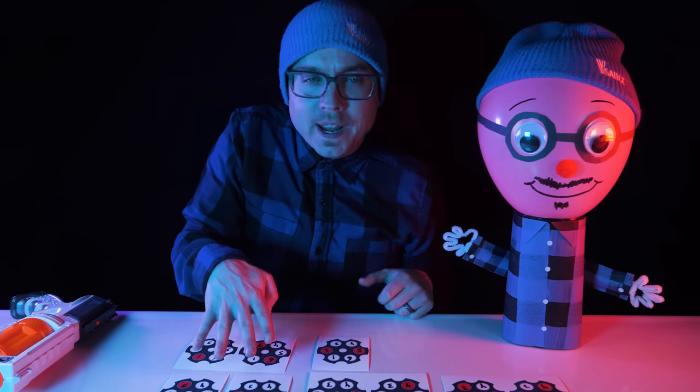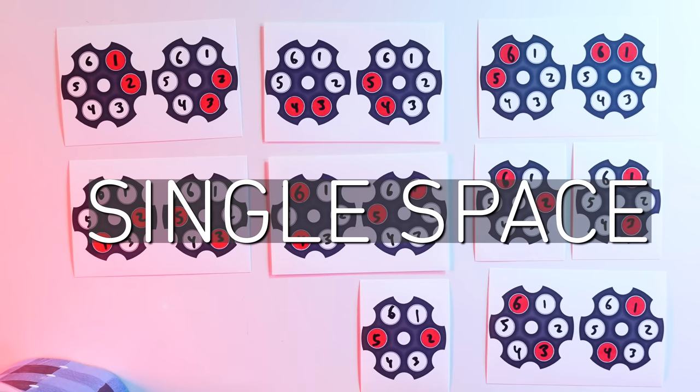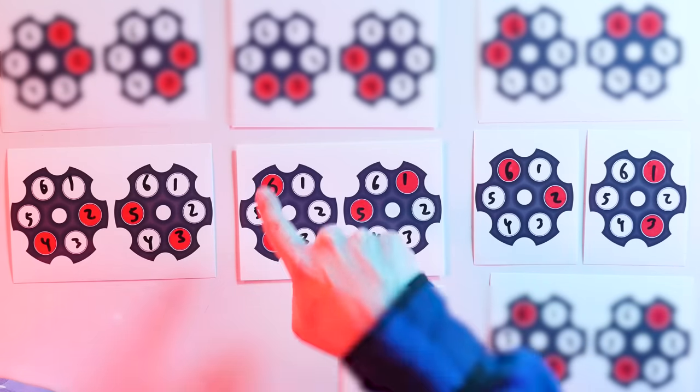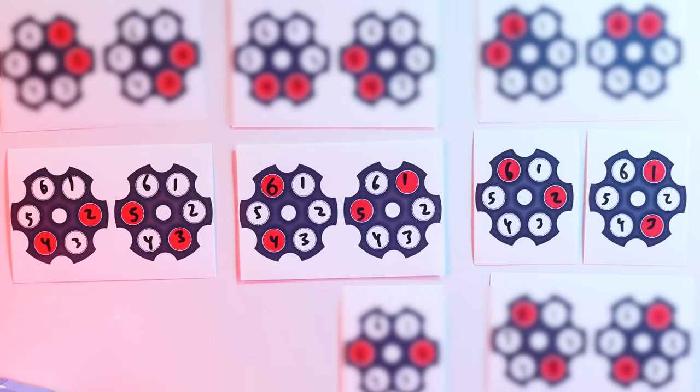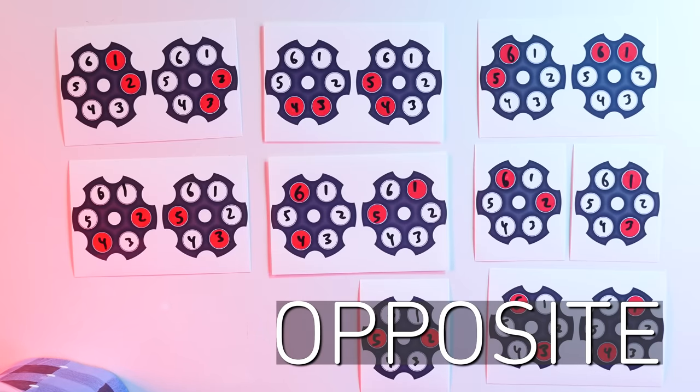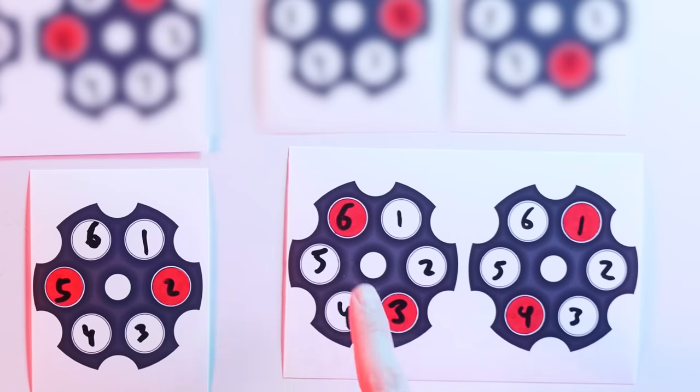There are 6 more ways that there can be a single space between the darts. So 1 and 3, 2 and 6, 1 and 5, 4 and 6, 3 and 5, 2 and 4. Finally, there are just 3 ways that darts can be opposite one another. 1 and 4, 3 and 6, and 2 and 5.